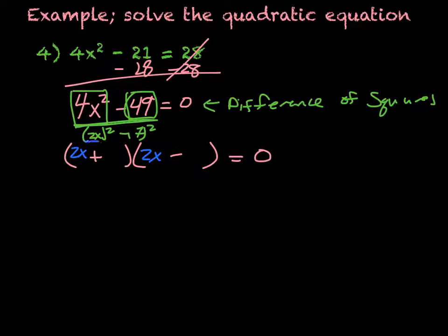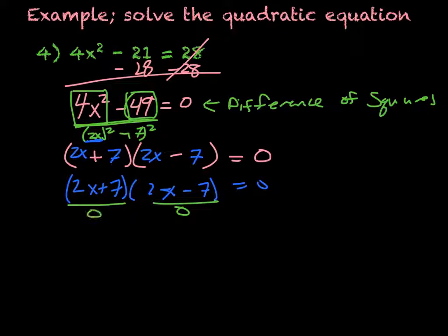And the 7 goes in the second slot. So (2x + 7)(2x - 7) = 0. Setting both of these equal to 0, I just solve.